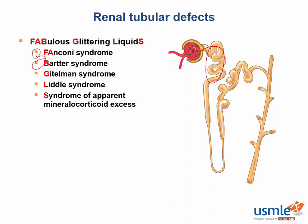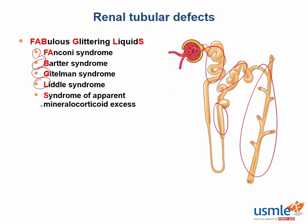B occurs next in the alphabet and occurs next in the kidney at the thick ascending limb. Gittelmann, which starts with G, occurs next in the kidney at the distal convoluted tubule. Then Liddle syndrome, which is next in the alphabet, occurs next in the kidney in the collecting ducts. And finally, SAME, or syndrome of apparent mineralocorticoid excess, screws everything up and occurs elsewhere, but we'll cover that in a second.